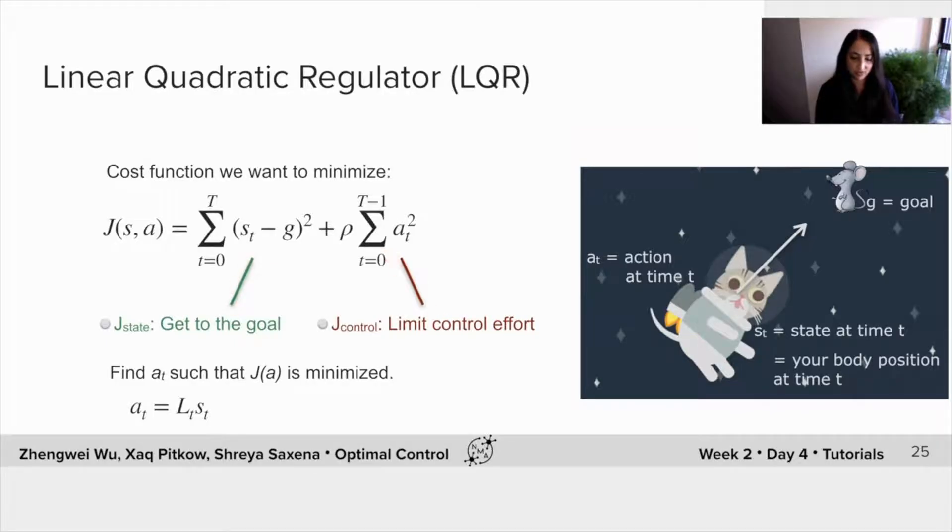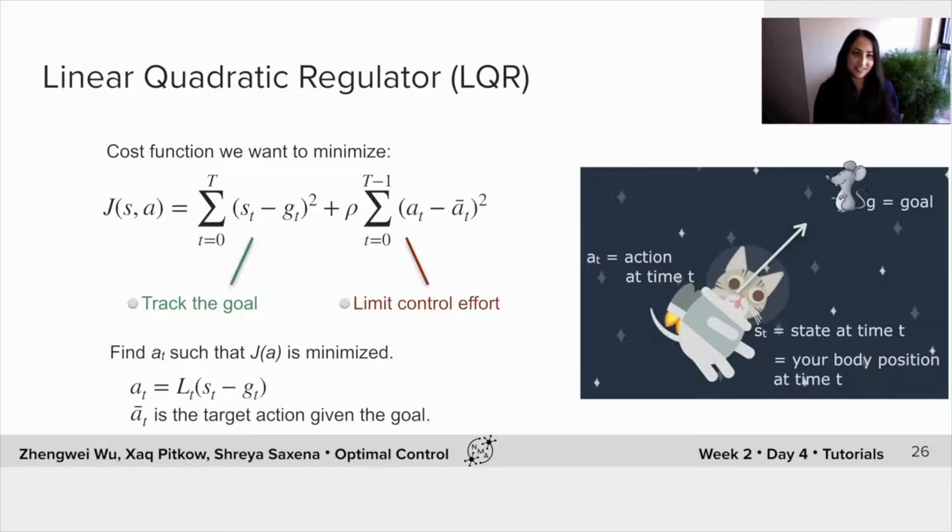This remains very similar. Here, we wanted to get to the goal and limit the control effort and find A of T such that this cost function is minimized. So you'll notice now, in this case, while we're trying to track a moving object, G has now just become G of T.